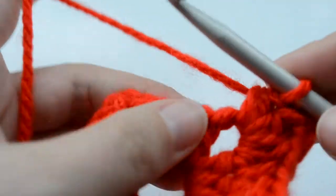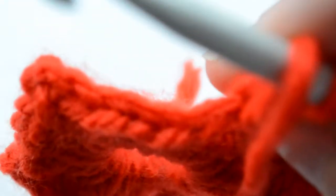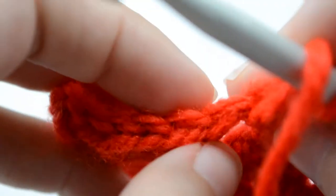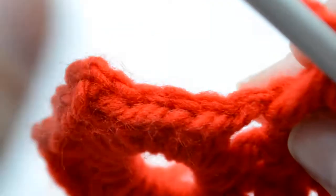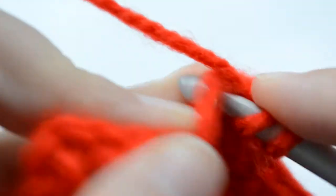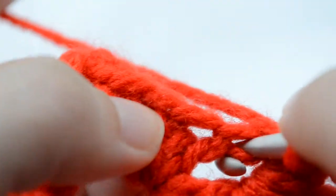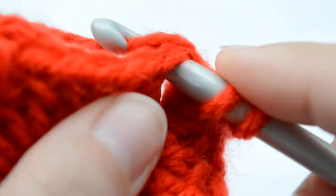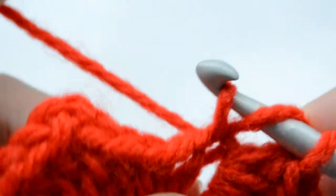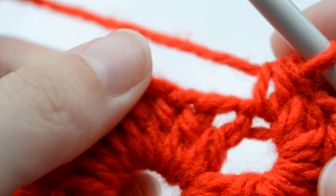That's the first chain there. I wish I could focus on it better so you would see it. That is the first chain we're working in. Wrap your material over and insert your hook through that one and work a half double crochet.